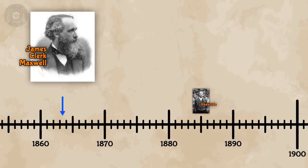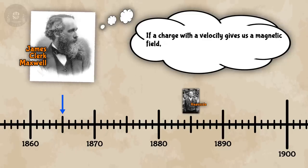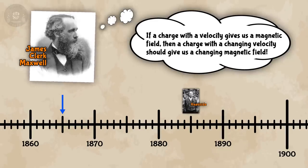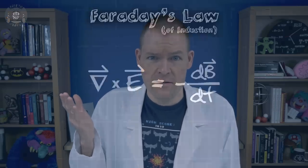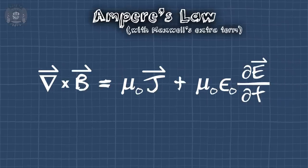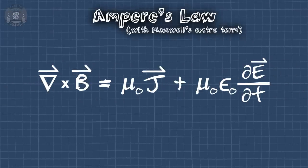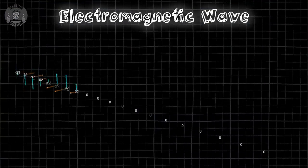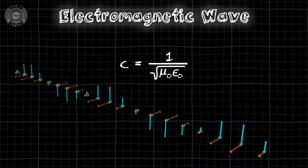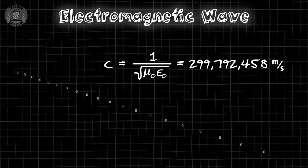Back to the timeline! Maxwell thought about this connection for a few more years, then suddenly something occurred to him. If a change in velocity gives us a magnetic field, then a change in a changing velocity gives us a changing magnetic field. That's when Maxwell saw the light — literally, he rediscovered light. We know from Faraday that a changing magnetic field gives us an electric field. If that electric field is also changing, we get a magnetic field — a changing magnetic field, which gives us a changing electric field, which gives us a changing magnetic field. You get the point. Maxwell had discovered electromagnetic waves, and when he calculated the speed of those waves, he found it to be a constant 299,792,458 meters per second — the speed of light.